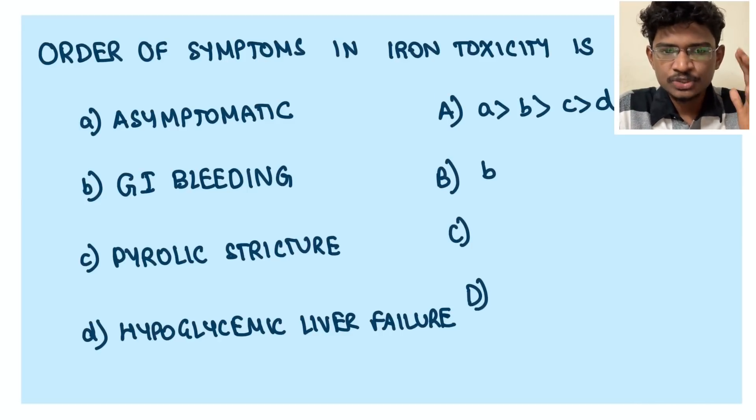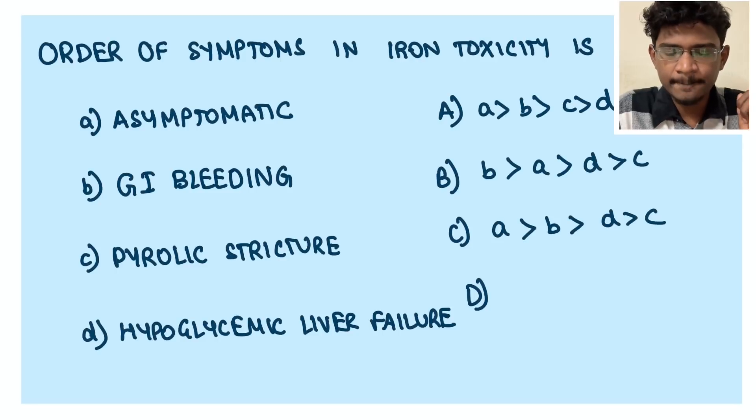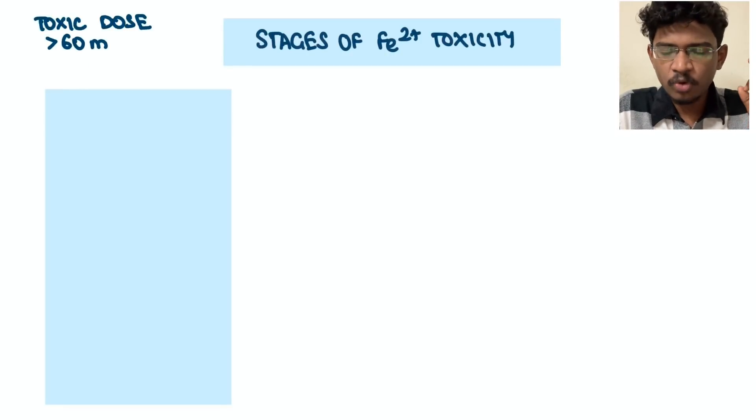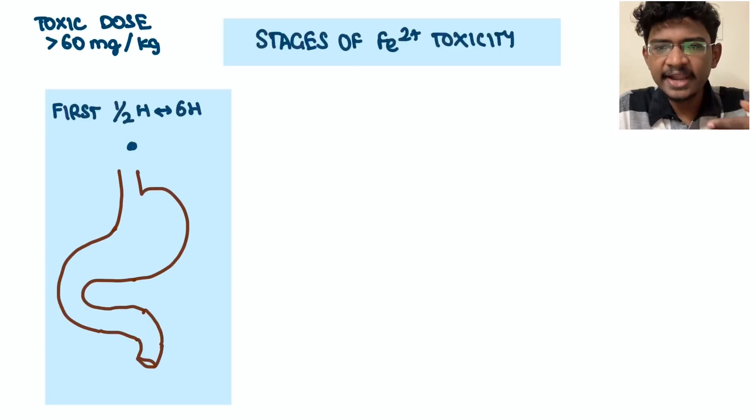Let's see iron toxicity in detail. First, what is a toxic dose that will cause systemic toxicity? 60 mg per kg. So if we take someone 60 kilograms, it will be like 3.6 grams needed.